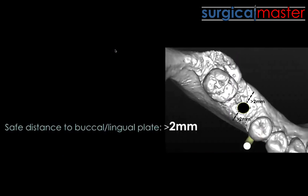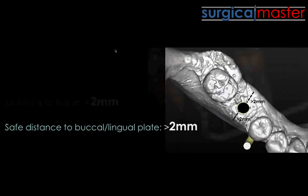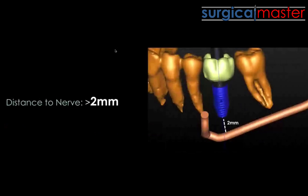From a buccal-lingual direction, you'd like to have at least two millimeters to the buccal plate. We don't always have that luxury, so sometimes we need to adjust the implant position or plan preventative grafting. I set up every software to warn me when I'm getting closer than two millimeters to the alveolar nerve. Two millimeters doesn't sound like a lot, but it's actually quite a bit of leeway.